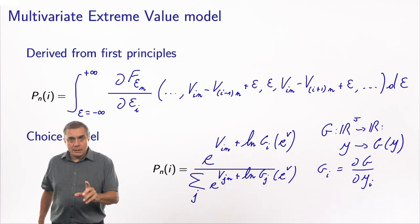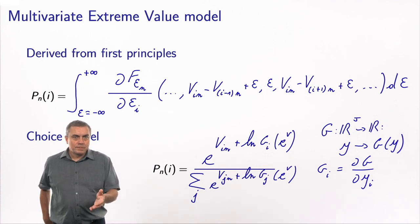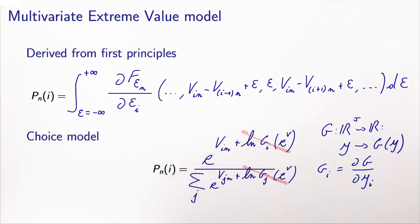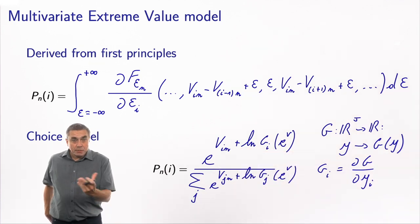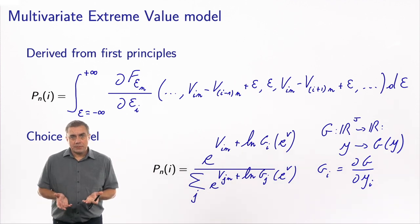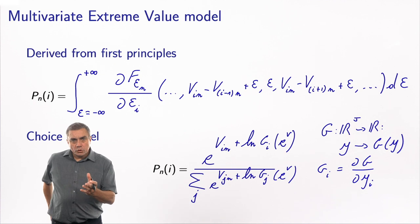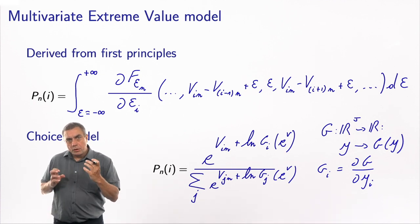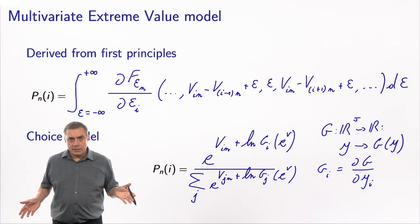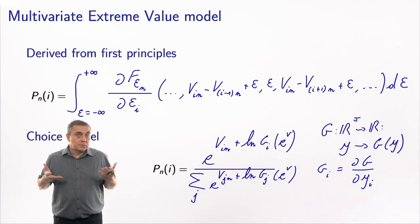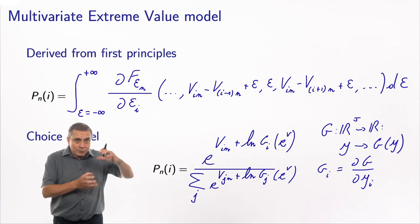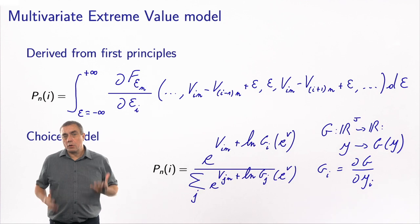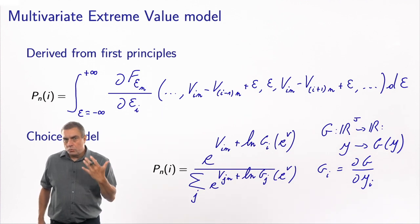The second and most important remark is that it looks like a logit. Indeed, if you didn't have these correction terms, it would be logit. This can be viewed as a logit model where each deterministic part of the utility function is shifted by a term that captures the correlation among the alternatives. The role of this G function is to capture the correlation of the error terms of the various alternatives. So we have a logit model where the V's are shifted to account for the correlation — that's a way to interpret it.